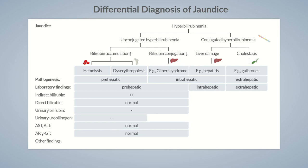In hemolysis, laboratory findings reveal low hemoglobin levels and often reduced levels of haptoglobin. In addition, LDH levels are elevated as a result of cell damage, and there's a reactive increase in the reticulocyte count. Dyserythropoiesis is characterized by low hemoglobin levels; in contrast to hemolysis, the reticulocyte count is low.